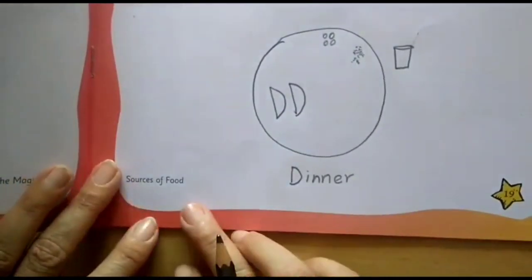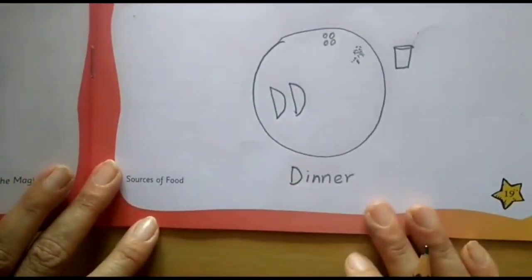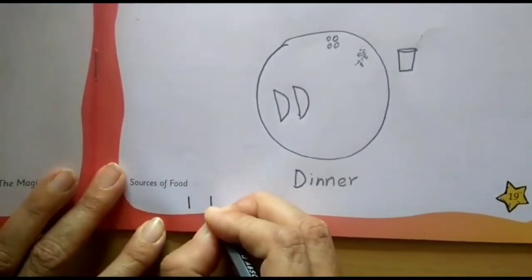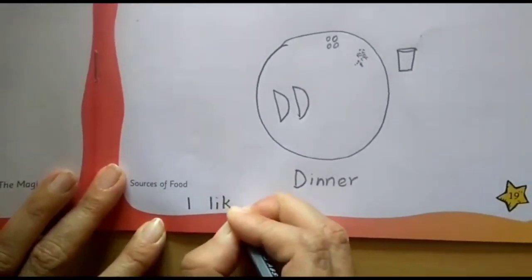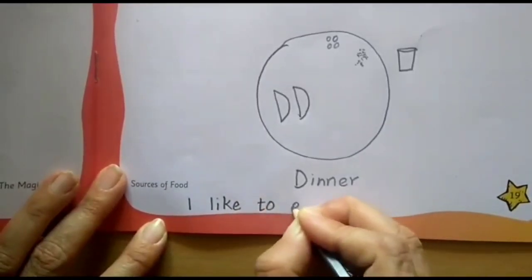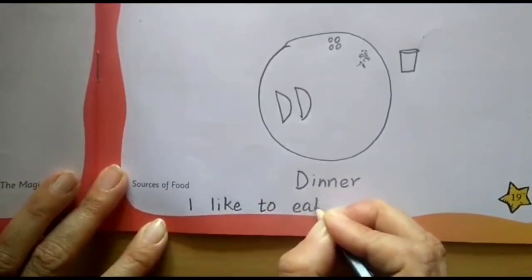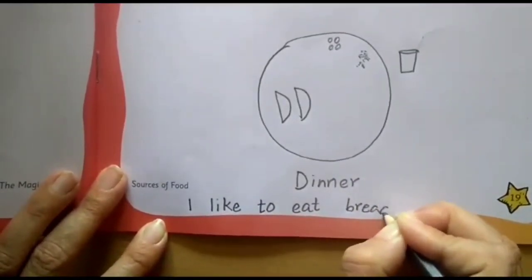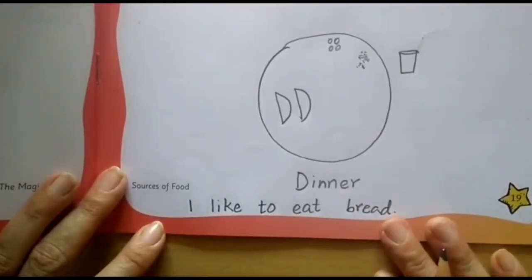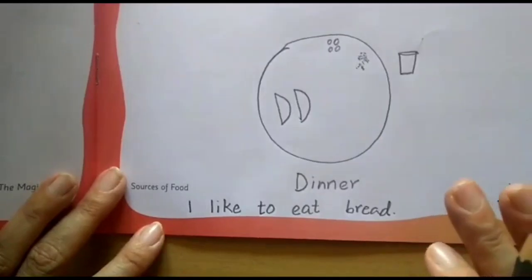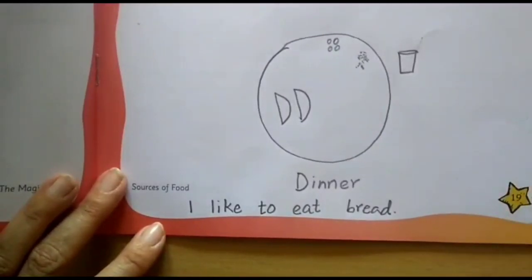As I want to write I like the bread here. So I will write I like to eat bread. So here likewise you need to write why you like either breakfast or lunch or dinner.